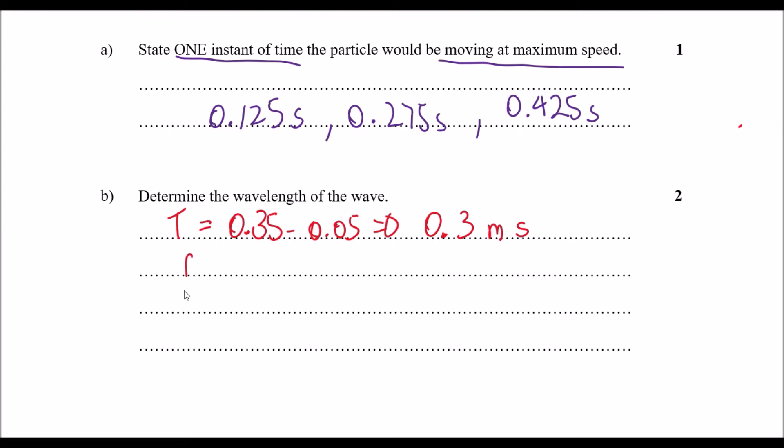So we have frequency which is the inverse of one period. So the inverse of one period is 0.3 times 10 to the power of minus 3. That is directly equal to 3333.3 repeater seconds.